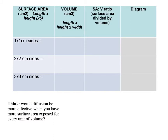Imagine we have three cubes, like three dice. One of them is one by one on the side, one is two by two, and one cube is three centimeters by three. If we worked out the surface area - the area of one side times six because it's a cube - for the one by one that would come to six, for the two by two that would be four times six which comes to 24, and for the three by three that's nine times six which equals 54.